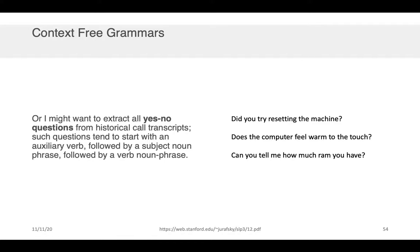Let's work through another example. Let's say I want to extract all yes or no questions from some historical call transcripts. Well, we might take advantage of the fact that such questions tend to start with an auxiliary verb followed by a subject noun phrase followed by a verb noun phrase and so if we had specified our context free grammar appropriately we'd be able to very quickly sift through a bunch of text to extract all the yes no questions like did you try resetting the machine, does your computer feel warm to the touch, can you tell me how much RAM you have. And once again doing this with a deep learning approach would be very very challenging in the absence of a very large number of labeled training examples.